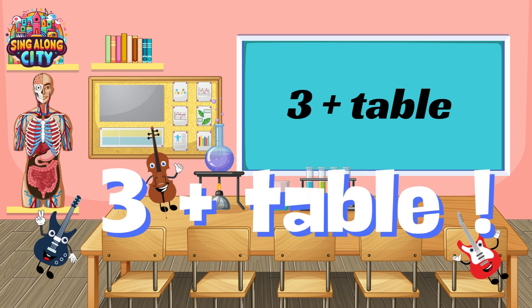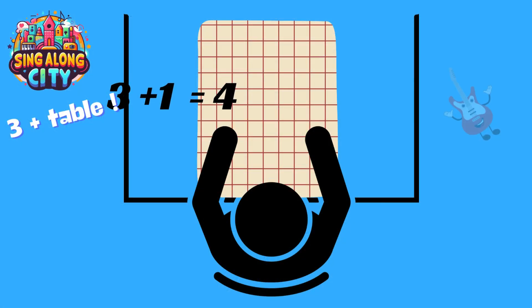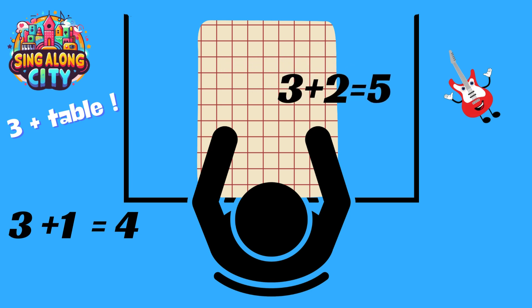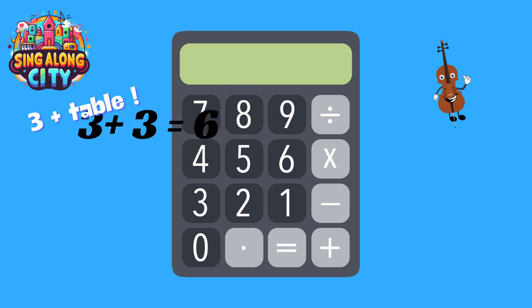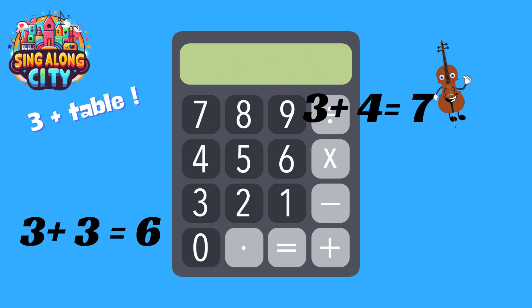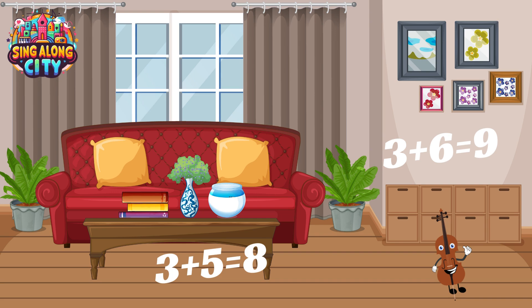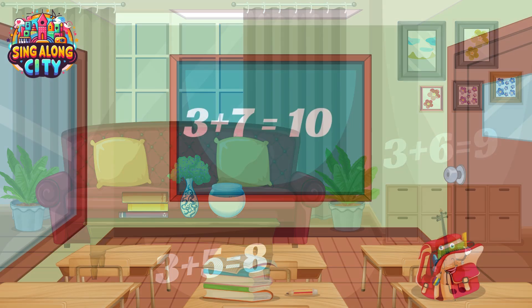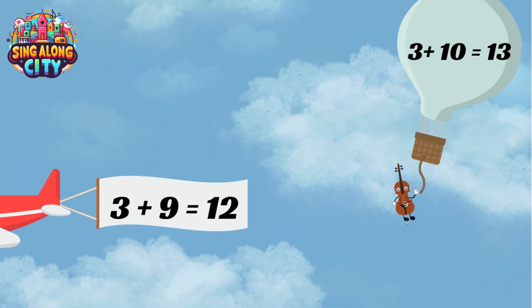Three plus one is four. Three plus two is five. Three plus three is six. Three plus four is seven. Three plus five is eight. Three plus six is nine. Three plus seven is ten. Three plus eight is eleven. Three plus nine is twelve.